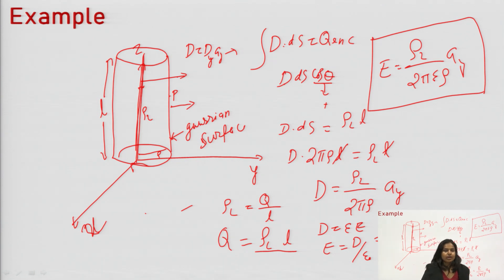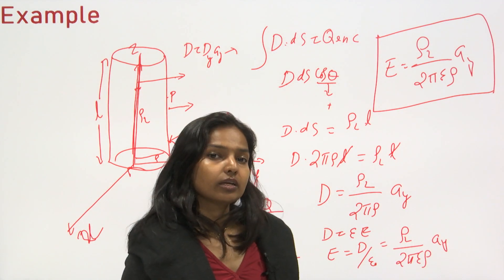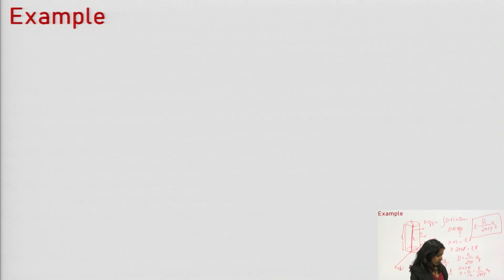In today's class, we have seen a few applications of Gauss law, which is way simpler than Coulomb's law. In the next class, we will start electric potential and also we will see electric field due to the dipole — dipole moment and electric field at different positions like on the axial point as well as on the perpendicular bisection of the dipole. Till then, take care, have a nice time. Thank you.